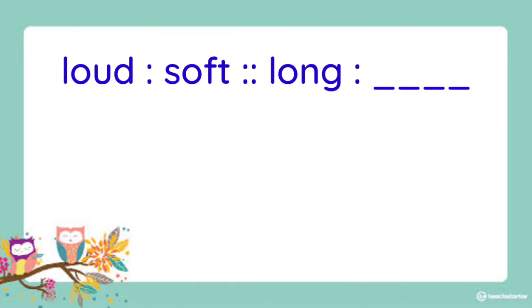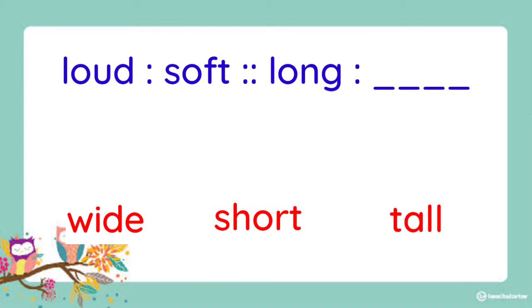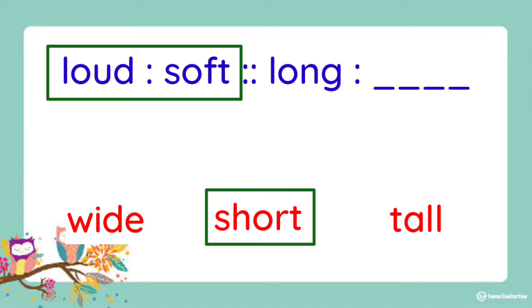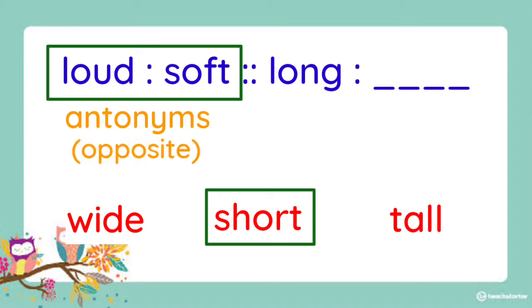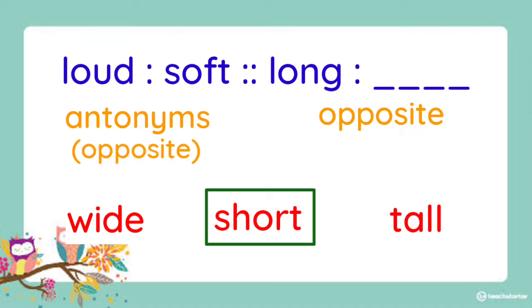Next. Loud is to soft as long is to blank. Is it wide, short, or tall? The answer is short. Because the first two words — loud and soft — are antonyms, meaning they have opposite meanings. So we need to find the opposite of long, and it is short.